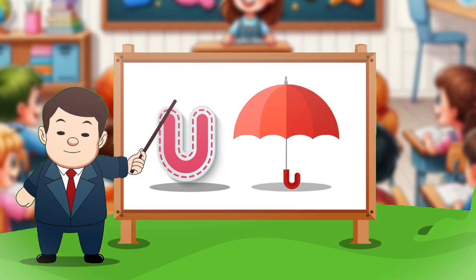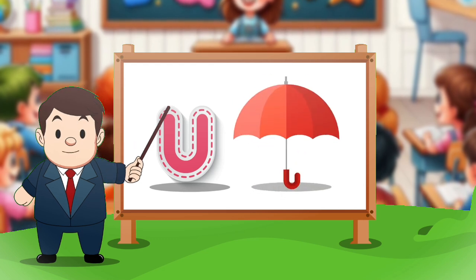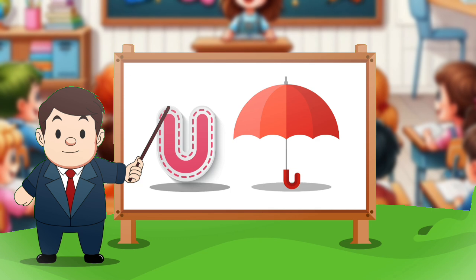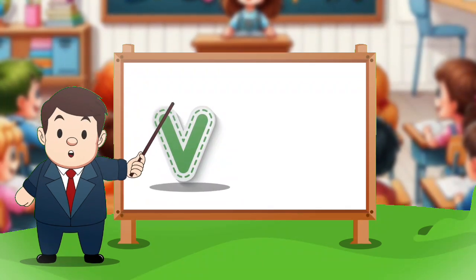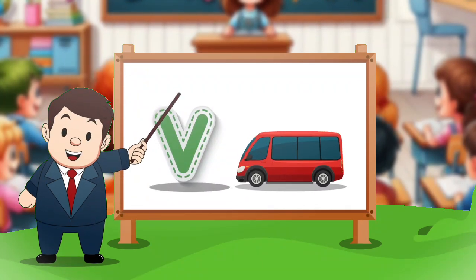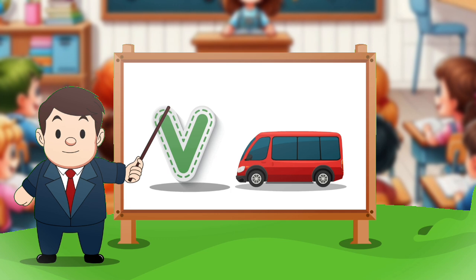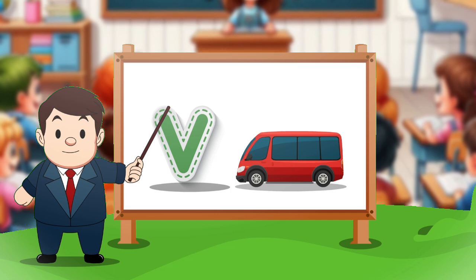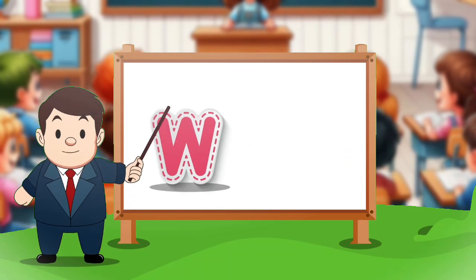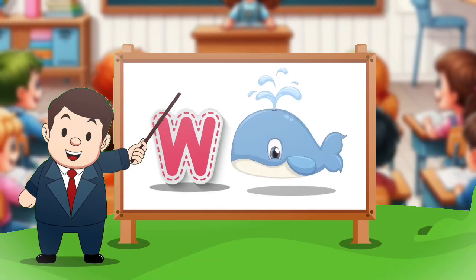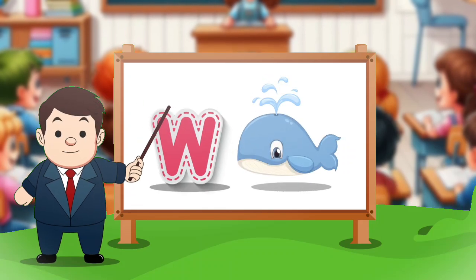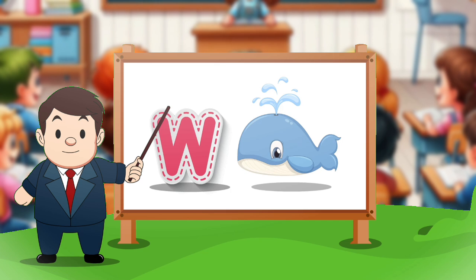U. U for umbrella. V. V for eagle. W. W for eagle.